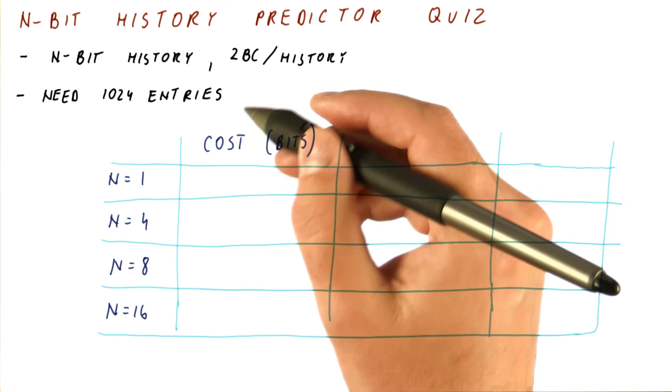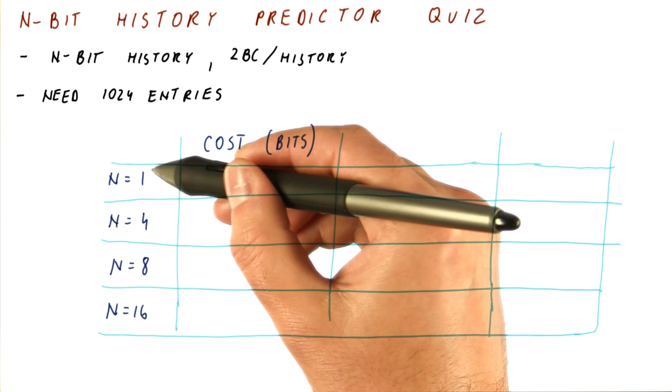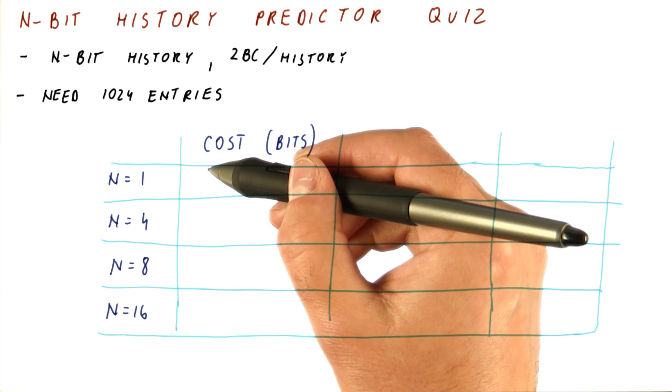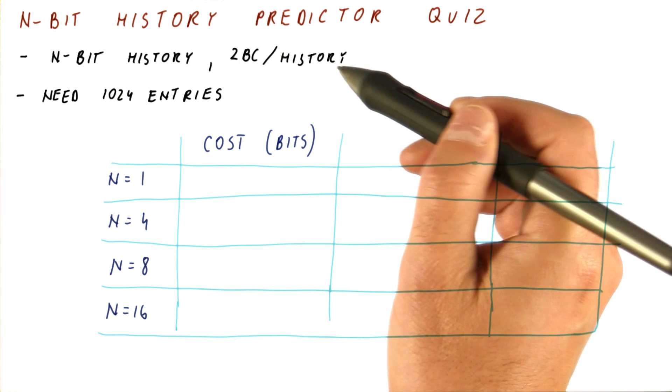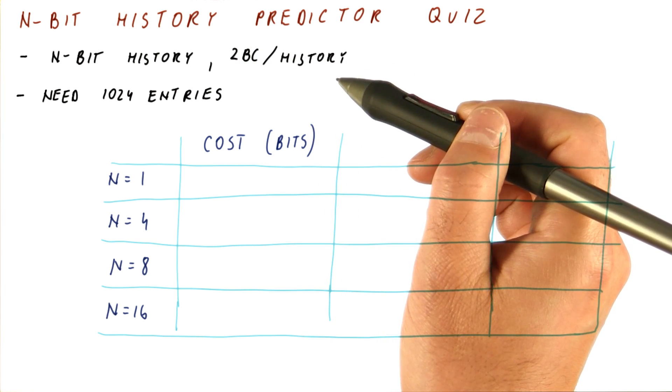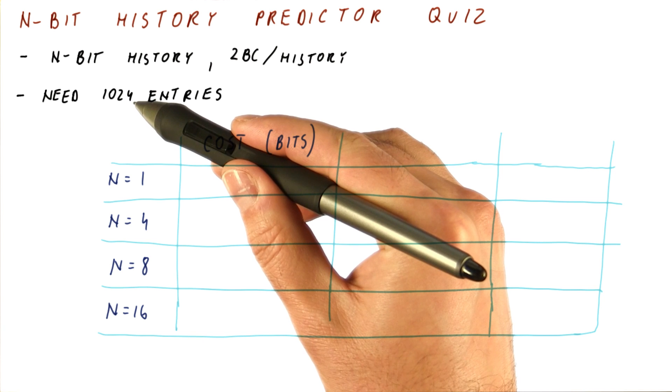I'm going to tell you that the cost with a one-bit history is one bit of history and two two-bit counters per entry, so it's going to be five bits times 1,024.